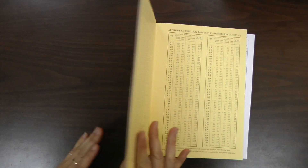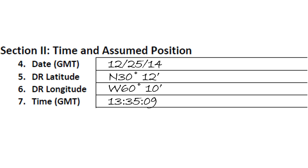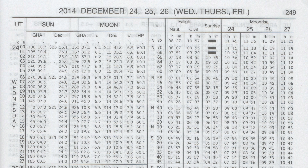To find the GHA of a celestial body, we first look up our tabulated GHA in the daily pages of the Nautical Almanac. In our example, the date was December 25, so we go to that date in our daily pages. We took our measurement of the Sun at 13 hours, 35 minutes, and 9 seconds. We look up our tabulated GHA. Notice that the time is listed in hours only. Later, we'll calculate a correction due to the minutes and seconds, but for now we ignore them.